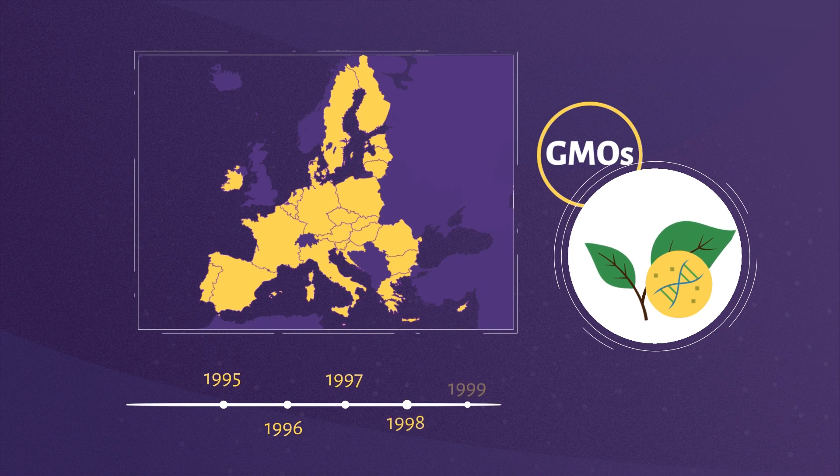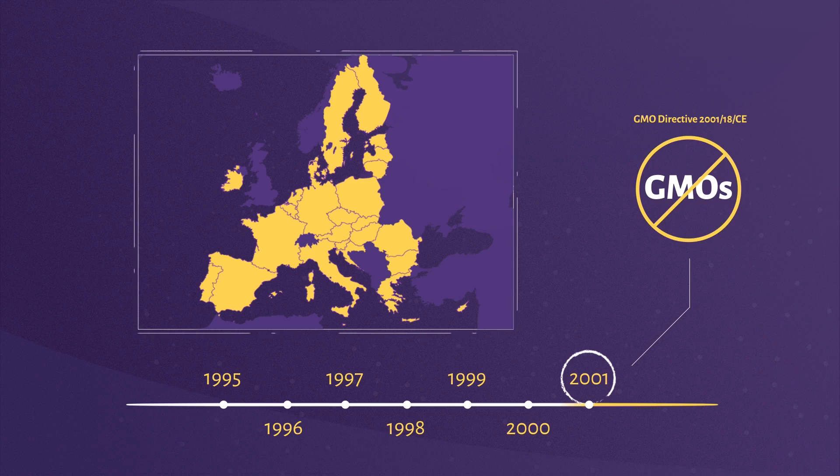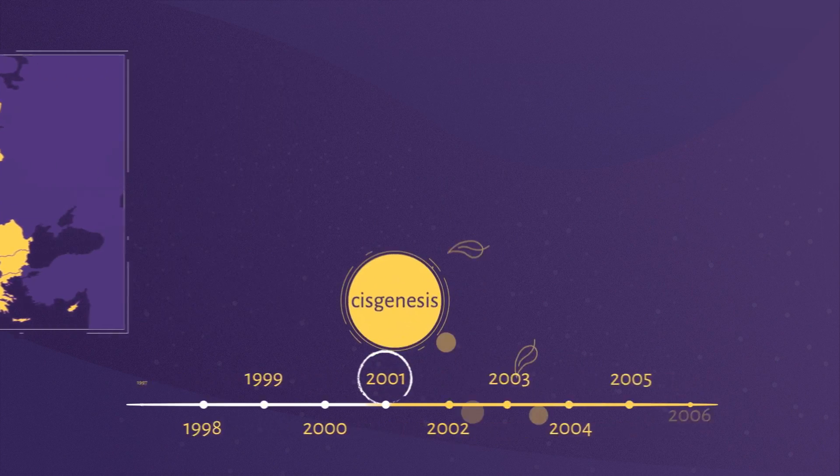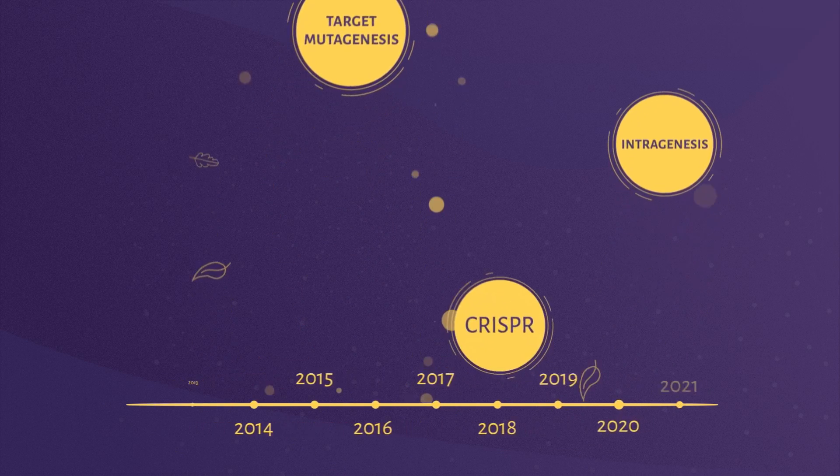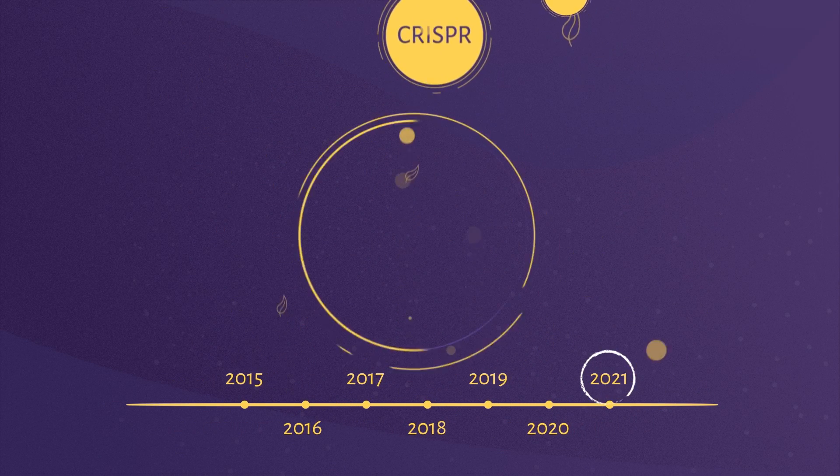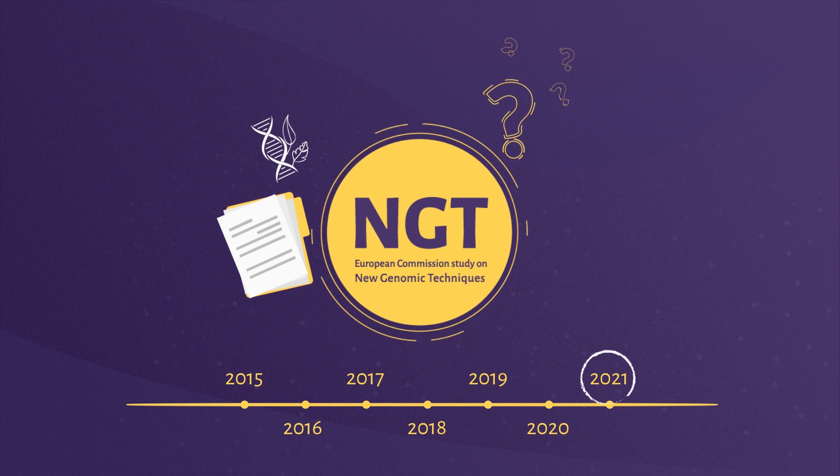GMOs are all subjected to legislation from 2001 which acts as a ban. However, in the last 20 years, new genetic techniques have emerged. For this reason, in April 2021, a study commissioned by the European Commission proposed a revision of this policy.